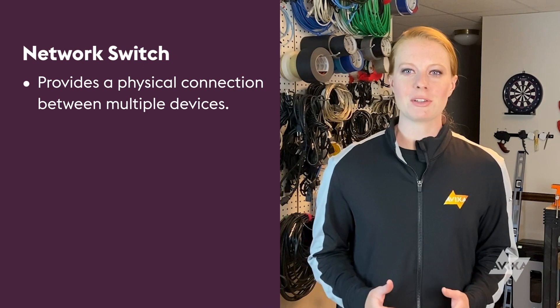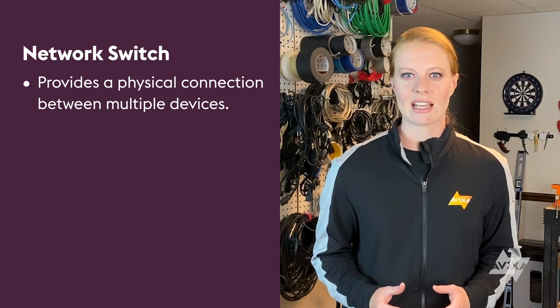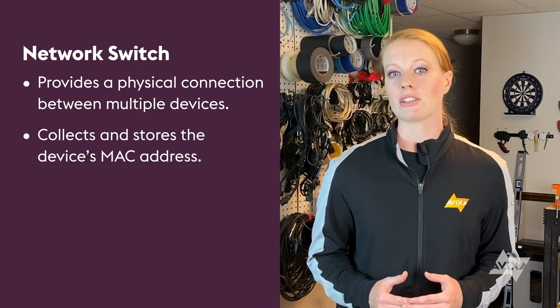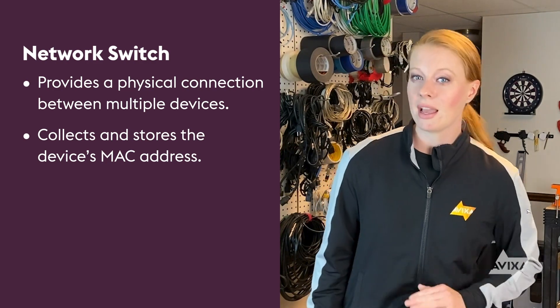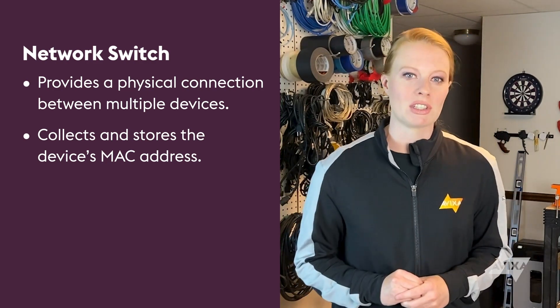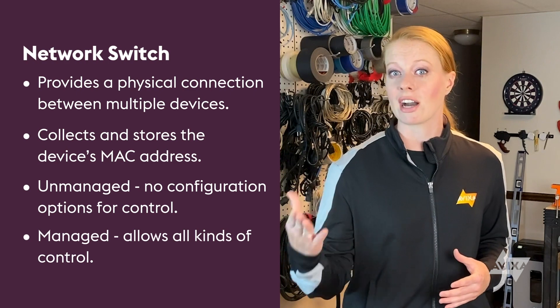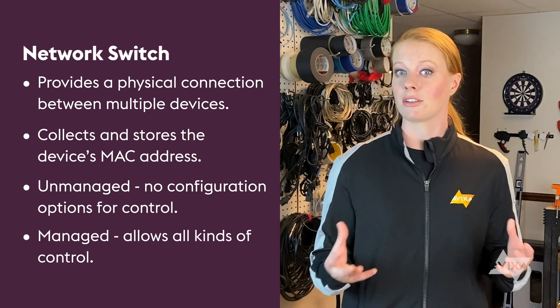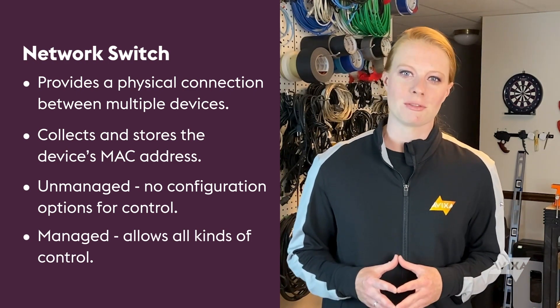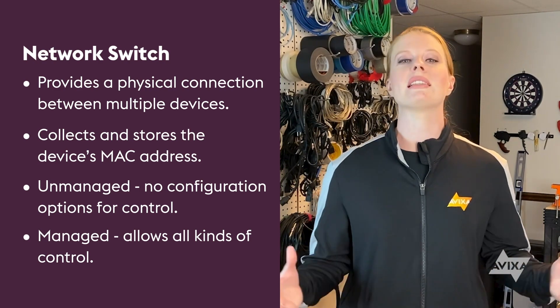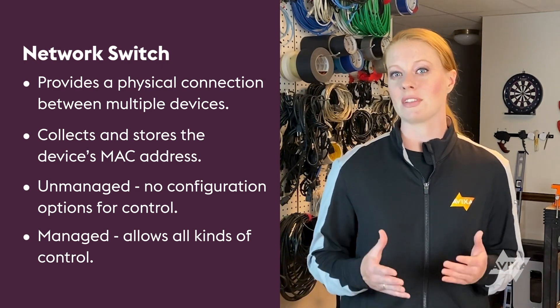There are three specific nodes that help connect and establish the network: switches, routers, and gateways. A network switch provides a physical connection between multiple devices. As each device is connected, the switch collects and stores the device's MAC address. There are typically two kinds of switches: unmanaged, which means no configuration options, and managed, which allows all kinds of configuration options and control. A managed switch is the first place a VLAN must be configured to let the rest of the network know that the data is part of a specific group.